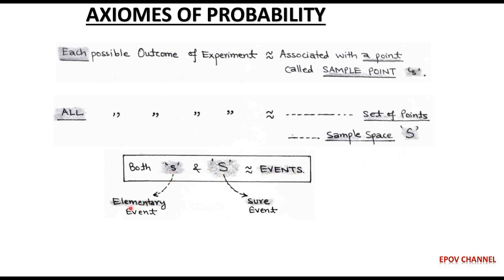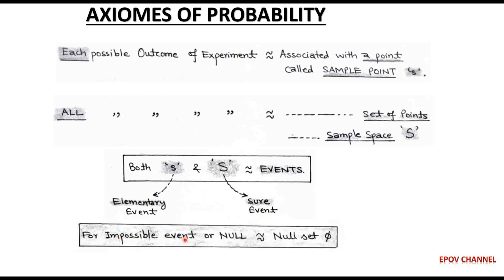Both sample point and sample space are called events. Small s corresponds to an elementary event that occurs only one time and is associated with a single point in the sample space, while capital S is called a sure event, which includes all the possible outcomes of the experiment that surely occur. Beside elementary and sure events, there is an impossible event, represented by the null set φ.